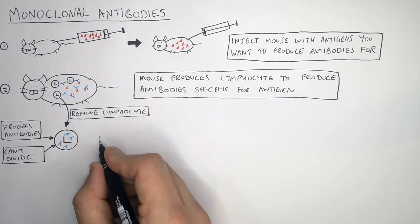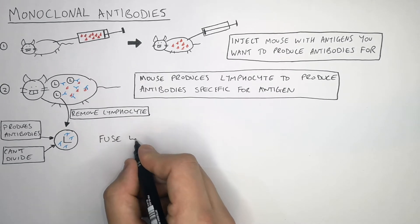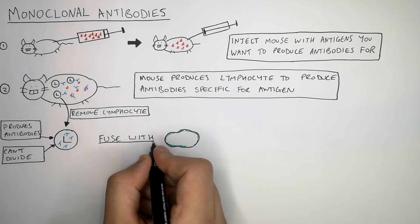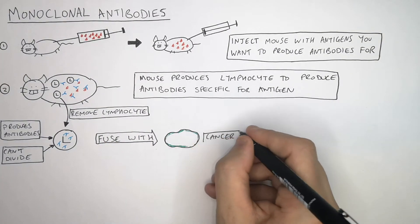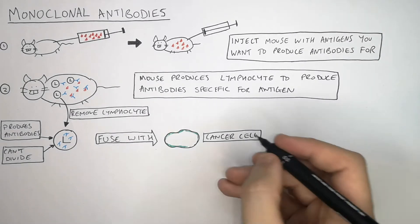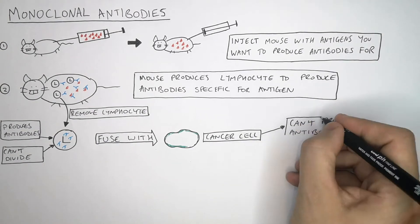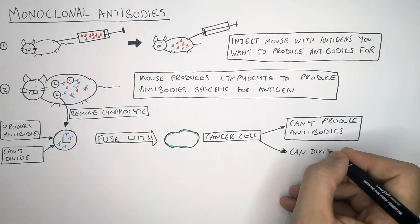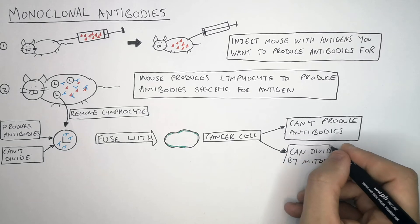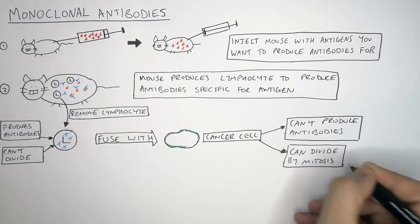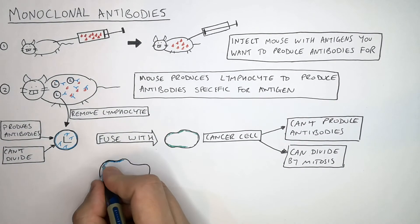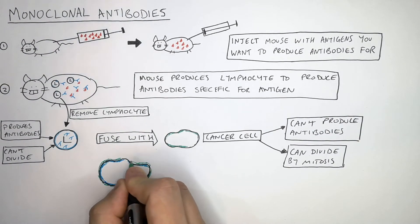So what the scientists will do is fuse the B lymphocyte from the mouse with a cancer cell — a tumor cell. The tumor cell cannot produce antibodies, but it can divide incredibly rapidly by mitosis. As you can see here, the B lymphocyte has been fused with the tumor cell.